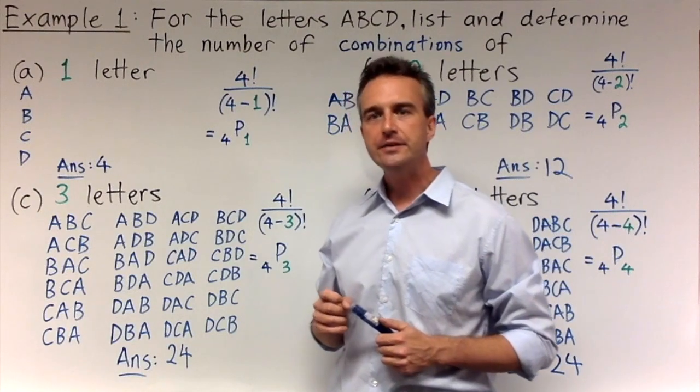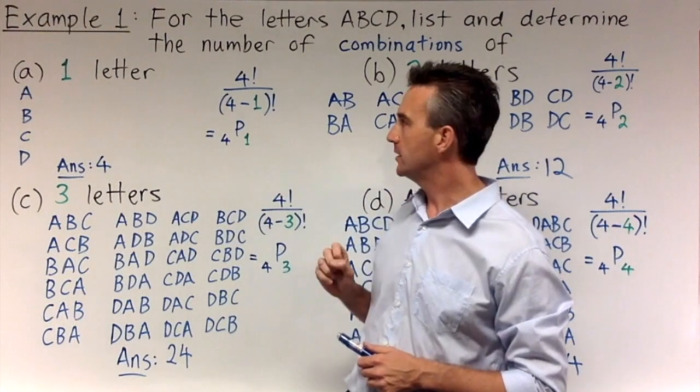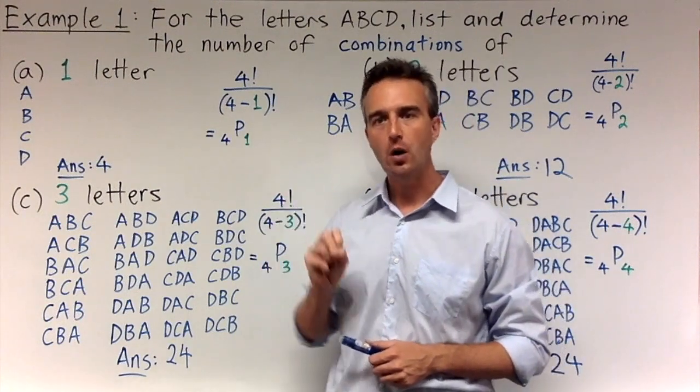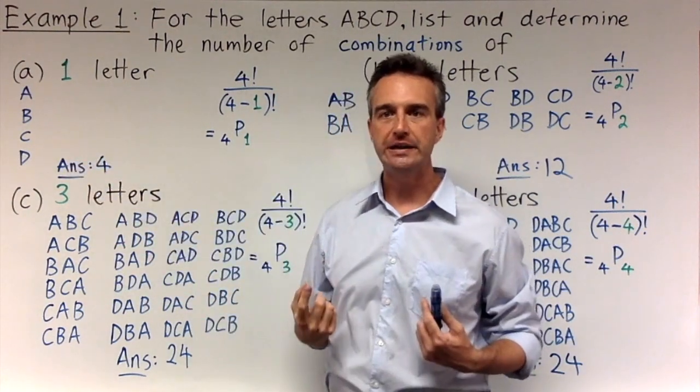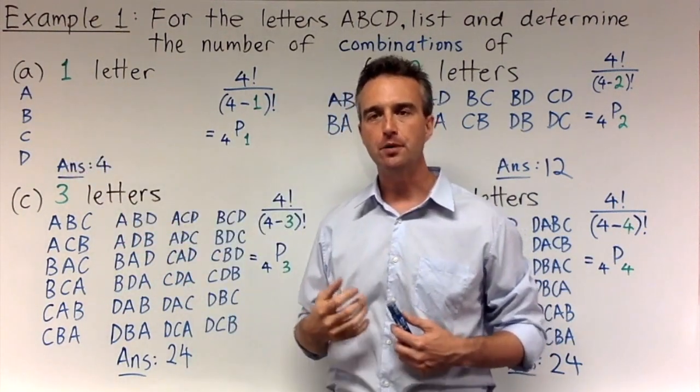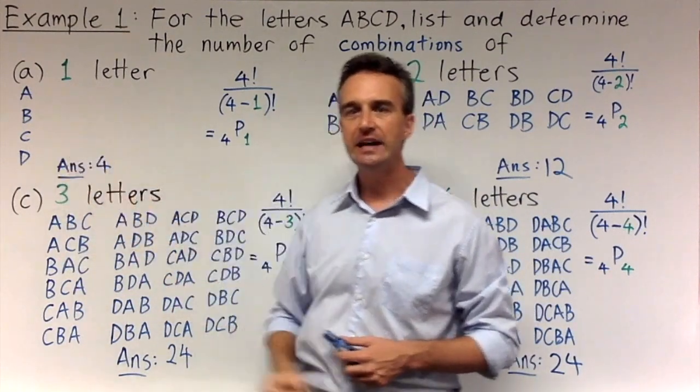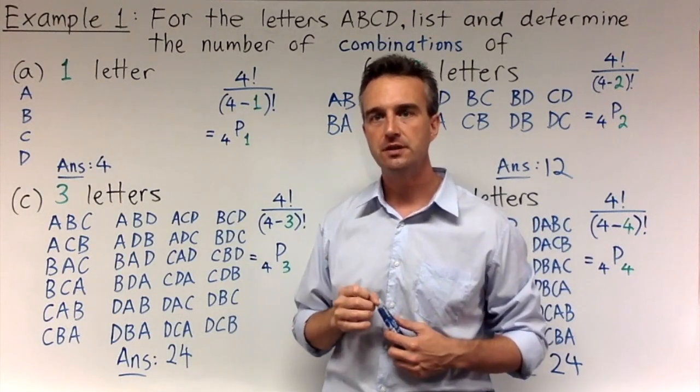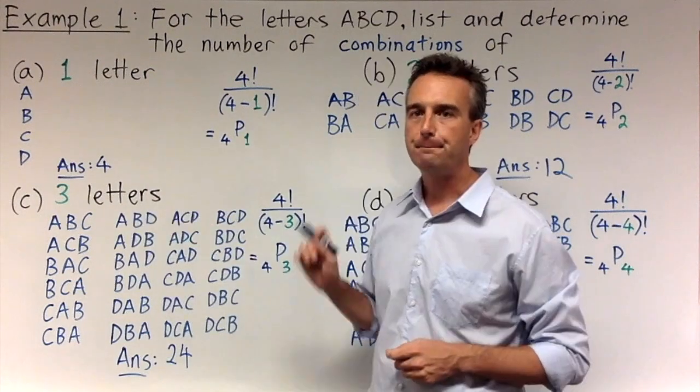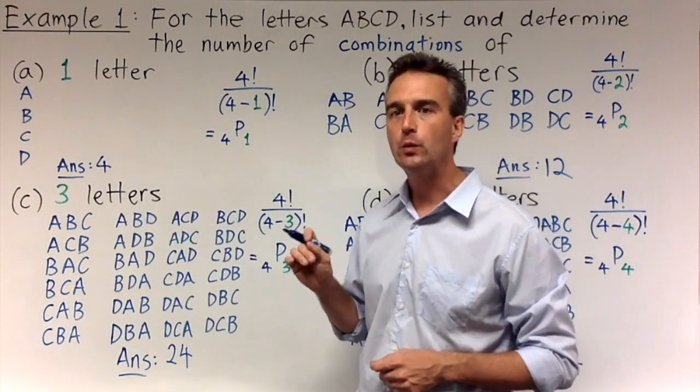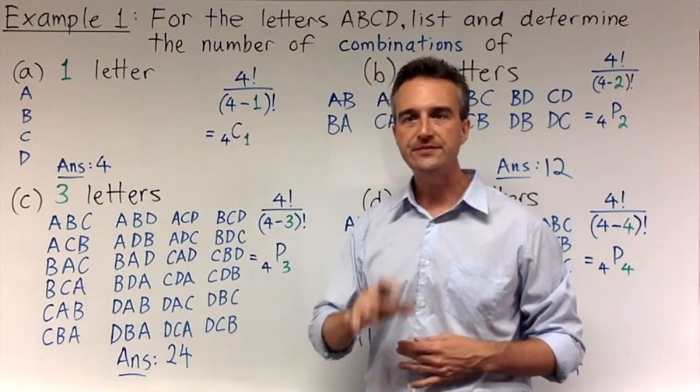So for the first one, how many different one letter combinations are there for the four letters A, B, C, and D? Well, all we do is choose one letter and we don't even arrange it. So A would be one possible one letter combination. B would also be one possible one letter combination. And also C and D are one letter combinations themselves. So the answer would not actually change. The answer would still be four combinations. But instead of 4P1, the answer would be 4C1. C for combinations.